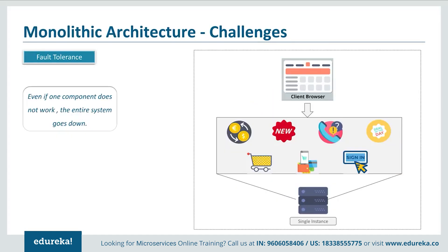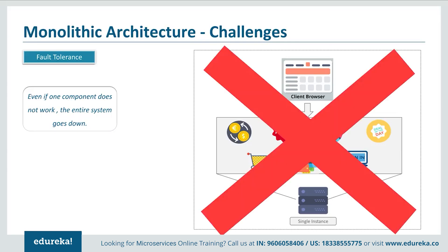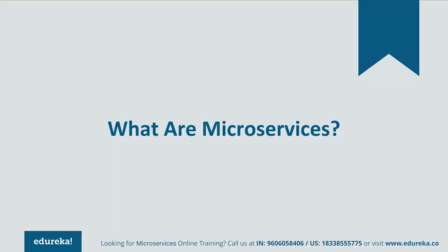The third challenge is fault tolerance. In a shopping cart application, even if one feature of the application doesn't work, the entire system goes down. This not only creates a problem for users but also for developers, as they have to rebuild it again. To avoid these challenges, developers decided to shift from monolithic architecture to microservices.